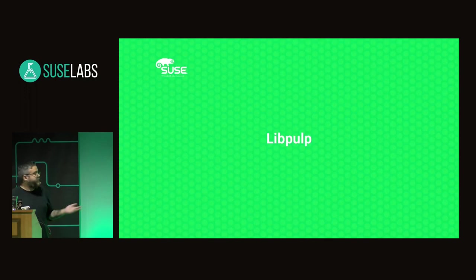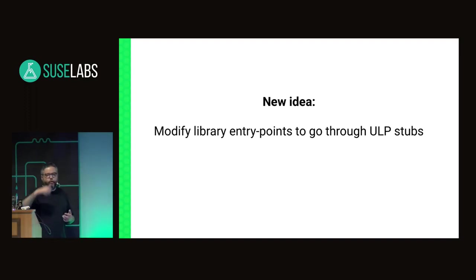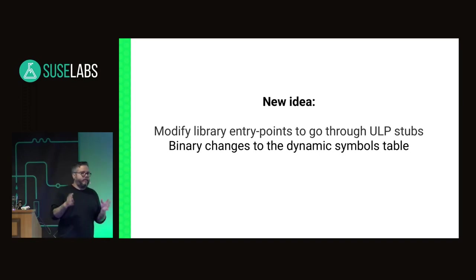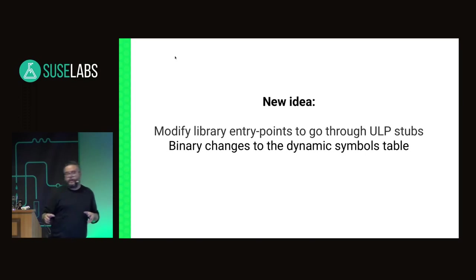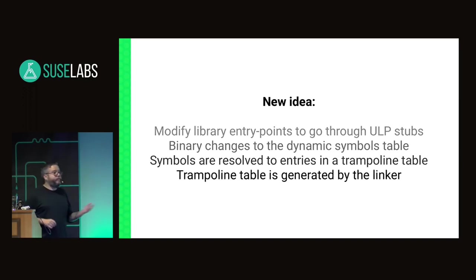We continued pursuing something and eventually reached what we called libpulp — the P doesn't mean much, it just sounds better than libulp. Our new idea is to modify library entry points to go through ULP stubs — code that will track control flow. Basically, we go to the binary and change the dynamic symbols table, cheating the dynamic linker. Whenever the dynamic linker tries to resolve the address of a given symbol, since we've modified the dynamic symbols table, it resolves to something we want rather than the actual function. The symbols are resolved to entries in a trampoline table generated by the linker, requiring special linker-level preparation for the library — but the user doesn't have to change source code.